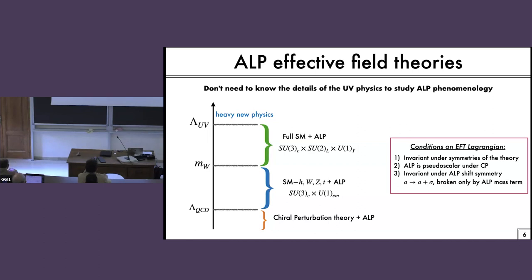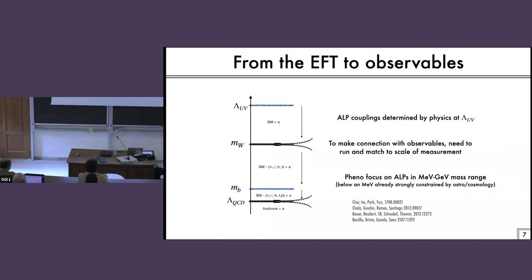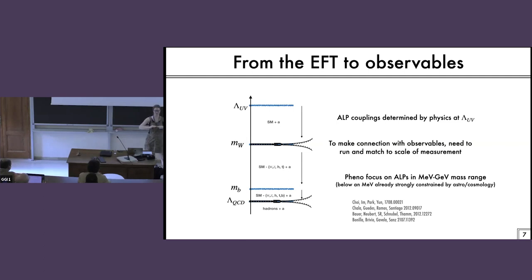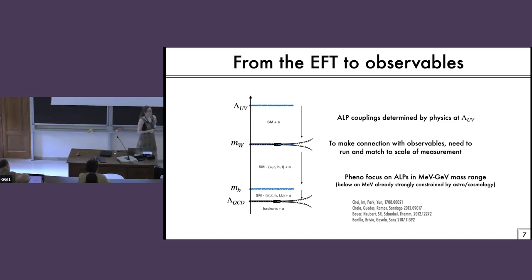I'm going to talk about all of these. One thing to remember is that this ALP is always going to come from some high scale — you're imagining that whatever is generating it has to be above the electroweak scale. So whatever couplings you have at whatever scale, it has to be consistent with the fact that it came from a gauge invariant theory — SU(2)_L invariant basically. And once you've decided what couplings your model has, you need to make connections with the observables at different scales: running and matching through all of these effective field theories.